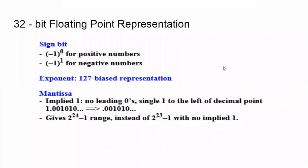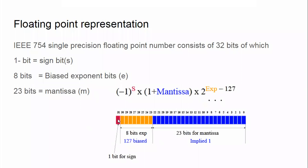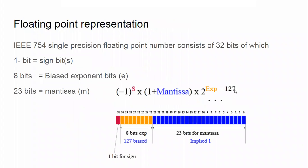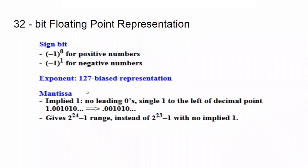For 32-bit single precision: (-1)^s where s is zero for positive numbers and one for negative. The exponent uses a biased representation of 127. The mantissa has an implied leading one — no leading zeros — with a single one to the left of the decimal point. For example, 1.001010 means the mantissa portion is everything after the decimal point; the one is implied.